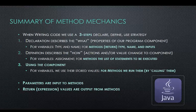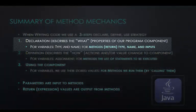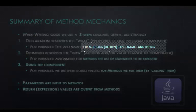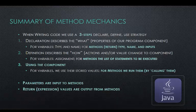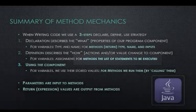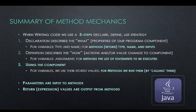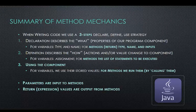Let's recap a summary of the method mechanics. When writing code, we use a three steps declare, define, use strategy. Step 1, the declaration describes what? The properties of our program component. For variables, this describes its type and name. For methods, we describe the return type, the name, and the input parameter list. Number 2, the definition describes the how. These are the actions or the value changes to a component. For variables, assignment does the definition. For methods, the list of statements to be executed is its definition. Once we have declared and defined our variables and methods, we're ready to use them. For variables, we use their stored values. For methods, we run them by calling them. Parameters are our way of inputting information to a method. And the return statement is used to get output from our methods. Happy Java coding!